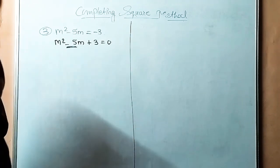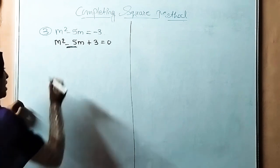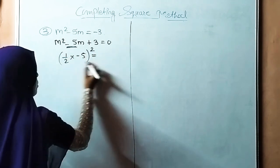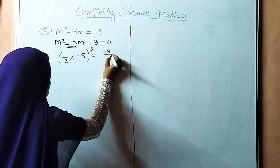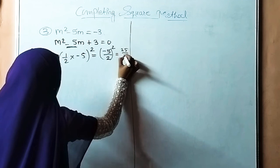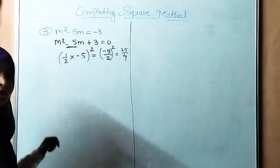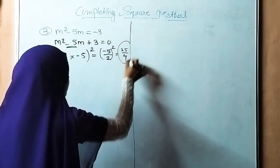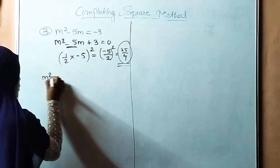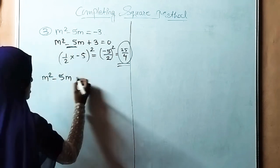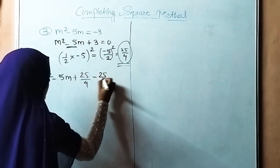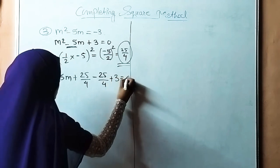The coefficient of m is minus 5. According to the rule, we take 1/2 times minus 5 bracket square, which gives minus 5/2 bracket square equals 25/4. So we add and subtract 25/4, writing m square minus 5m plus 25/4 minus 25/4 plus 3 is equals to 0.